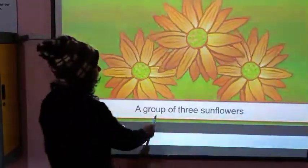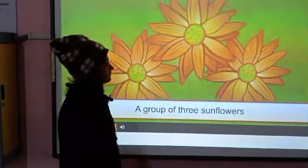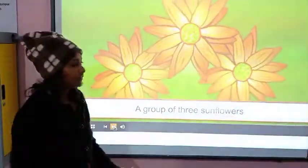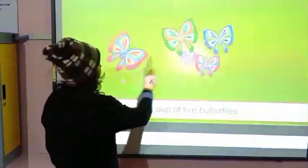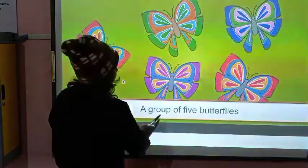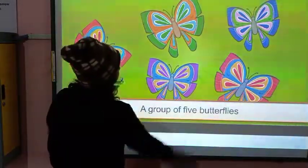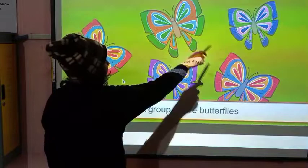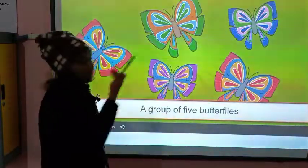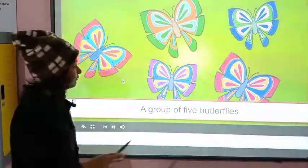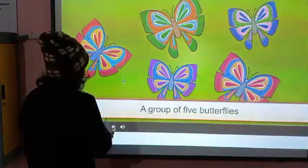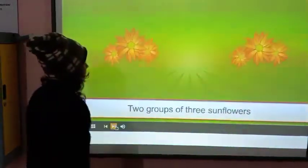A group of three sunflowers. A group of five butterflies. The total number of butterflies is five. There are five butterflies.